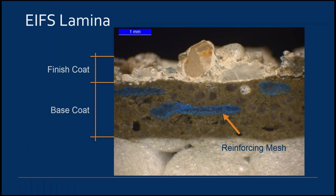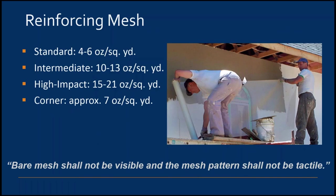The EIFS lamina consists of a base coat with fully encapsulated reinforcing mesh and a finish coat. The lamina can be polymer-based or polymer-modified. Polymer-based or PB laminas are most common and used with expanded polystyrene insulation, whereas polymer-modified or PM laminas are used with extruded polystyrene insulation boards and are less common.